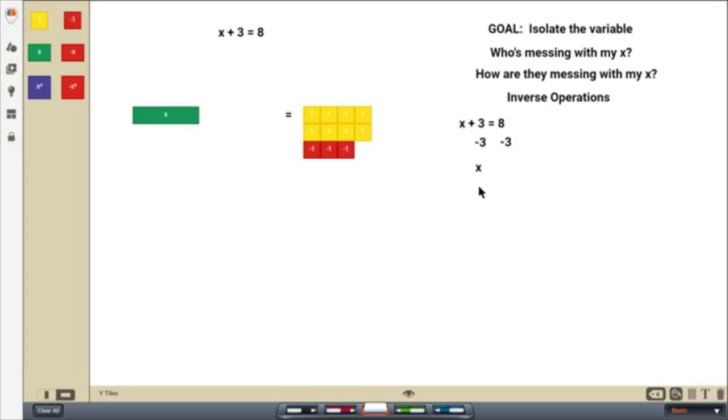So we have just x over here. Now I subtracted it. And then we have to do it over here on this side. So I'm going to highlight all of this. And I'm going to tell it to combine them. We're going to add eight plus a negative three. And it leaves us with one, two, three, four, five.